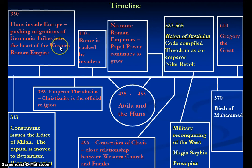By about 350, the Huns invade Europe. They're pushing the migration of Germanic tribes into the heart of the Western Roman Empire, once again helping trigger this rise of the east. In 392, Emperor Theodosius makes Christianity the official religion. Ultimately, this does not help save the Roman Empire, as in 410, Rome is sacked by largely Germanic invaders.